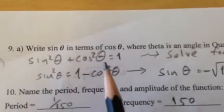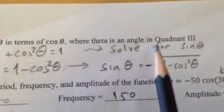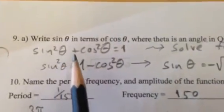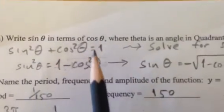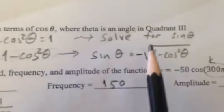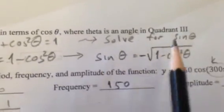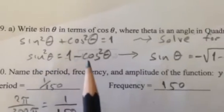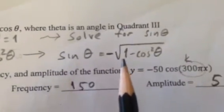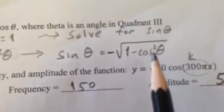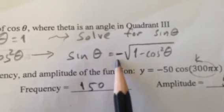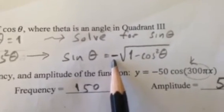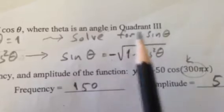We're going to flip it over now. And look at number 9 up there. Write sine in terms of cosine, where theta is an angle in quadrant 3. Well, there's my equation. Sine squared plus cosine squared equals 1. All I'm doing basically is solving that for sine. I'm writing sine in terms of cosine. So sine squared equals 1 minus cosine squared. I take the square root. It's the square root of 1 minus cosine squared. And the reason that negative sine is there is only because my angle is in quadrant 3, where sine is negative.